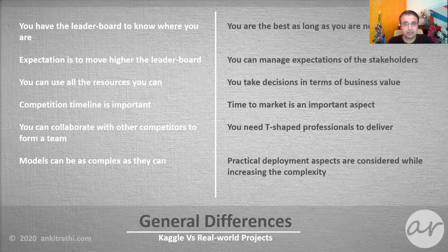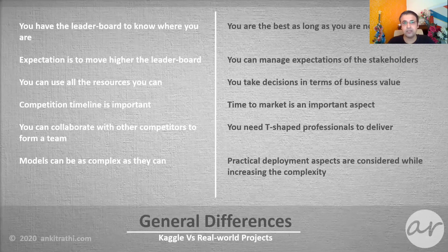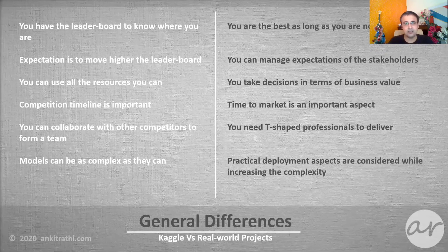In Kaggle, competition timelines are important, while in the real world time to market is a key aspect. In Kaggle, you can collaborate with other participants to form a team, while in the real world you and team members need to develop a T-shaped skill set — where the horizontal line represents data literacy shared across the team, and the vertical line represents depth in a particular area, such as cloud computing for a cloud engineer.